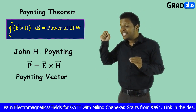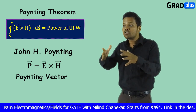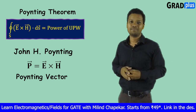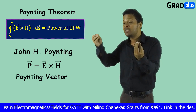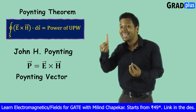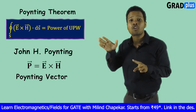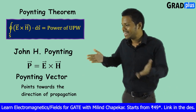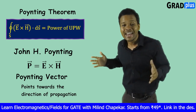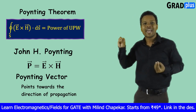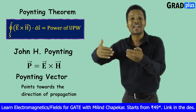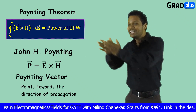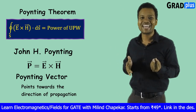The direction of propagation of power — the direction along which the energy is flowing — is given by the direction of the E cross H vector. The direction of propagation of the power of this EM wave is given by E cross H. That means the direction of E cross H points towards the direction of propagation. E cross H is pointing along the direction of propagation of power of that EM wave. So you can also write it as the Pointing Vector.